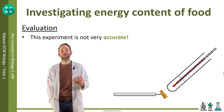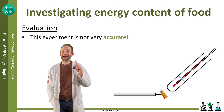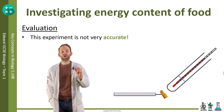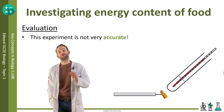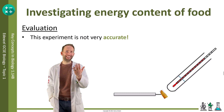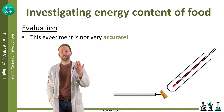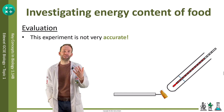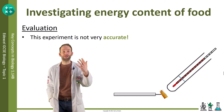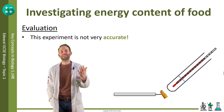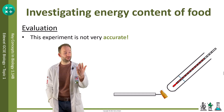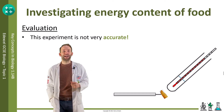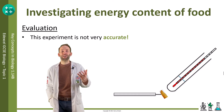In terms of evaluating this experiment, it's not a particularly accurate experiment. Accuracy is a measure of how close you are to the true value. If you look at the pack of food you are burning, it will tell you how much energy is in the food per 100 grams, and you can work out how much is in it per gram. You'll see that your result is a long way off what is written on the back of that packet, so it's not a very accurate experiment.